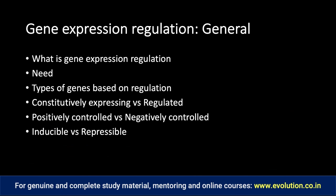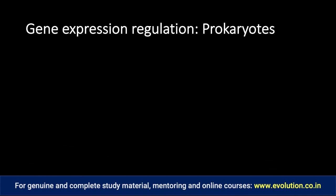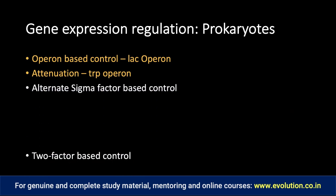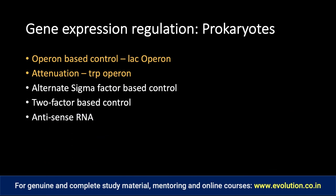Get hold of all terminology before moving to gene expression regulation in prokaryotes. Here you must know the mechanisms — do not commit the mistake of thinking only operon-based control has to be done. Many questions have been asked on operon-based control, and you must also do attenuation with tryptophan operon in detail — it has been asked in civil service mains as well as IFS mains. To complete gene expression regulation in prokaryotes, also do alternate sigma factor-based control, two-factor based control, antisense RNA-based control, ribozyme-based control, and riboswitch-based control.